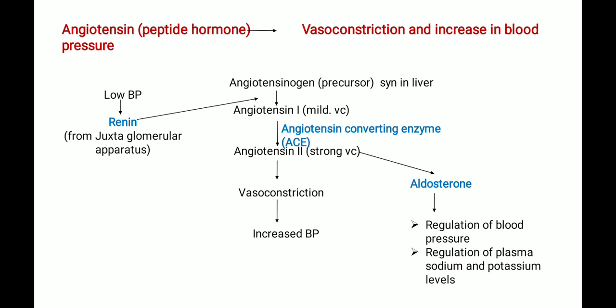Angiotensin is a protein — a peptide hormone — which causes vasoconstriction and increases blood pressure. There are two terms: vasoconstriction and vasodilation. Vasoconstriction is the narrowing of blood vessels, that is contraction of the muscular walls of blood vessels, which increases blood pressure. Vasodilation is the widening of blood vessels, that is relaxation.